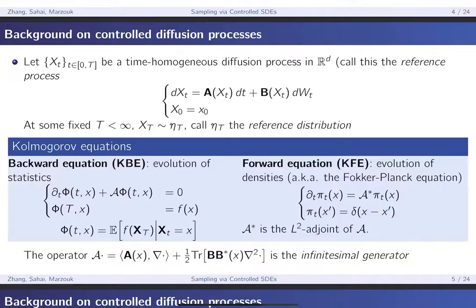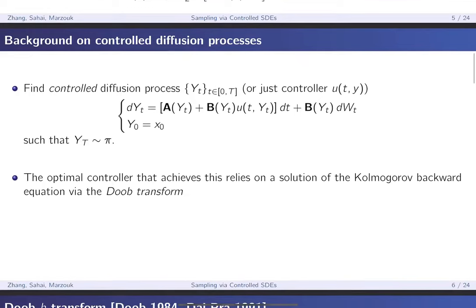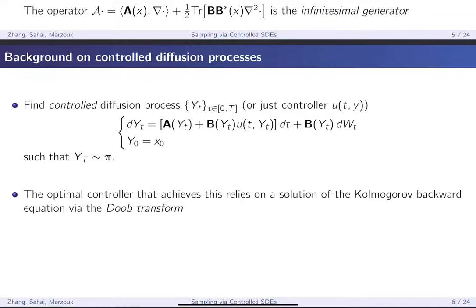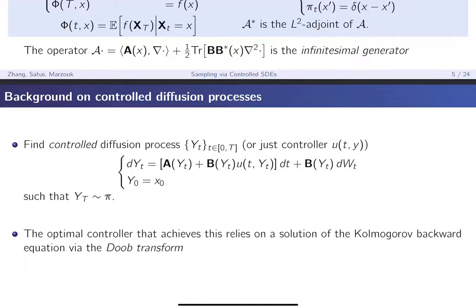The idea for us is to find a controlled diffusion process Yₜ, which has the same drift, diffusion term, and initial condition as the reference process. Can you find a controller — some modified drift term — such that the marginal of Yₜ at time T will be distributed according to our target distribution? What allows us to do this is the Doob h-transform, which says the optimal controller that achieves this goal is linked to a solution of the Kolmogorov backward equations. This will be very important for us.